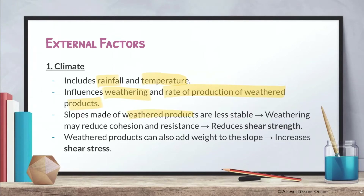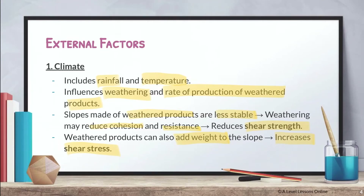Slopes made of weathered products are less stable. Weathering may reduce cohesion and resistance, hence reducing shear strength. Always link external and internal factors back to shear stress and shear strength. Weathered materials make the slope less stable because materials lose their structural cohesion, causing shear strength to reduce. Additionally, weathered products add weight to the slope, increasing shear stress. If you're unsure about shear stress and shear strength, check out my previous video — it's in the description.